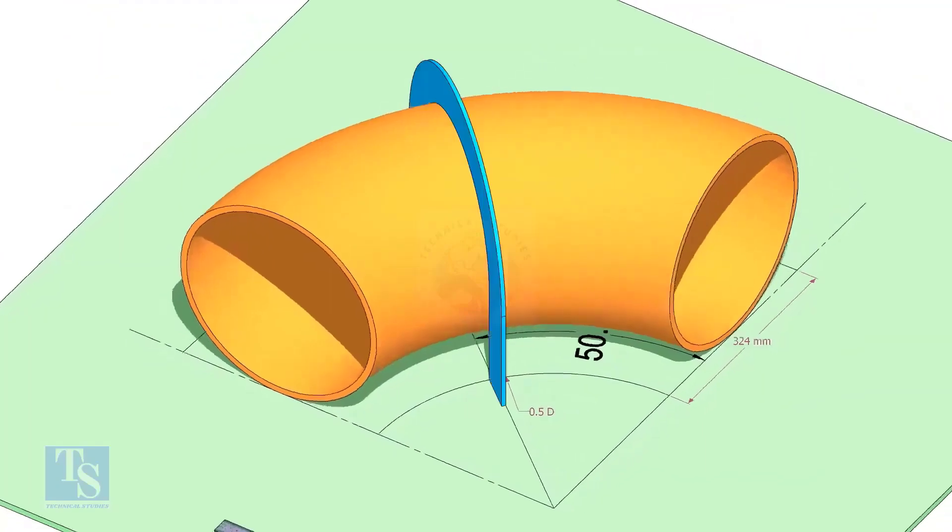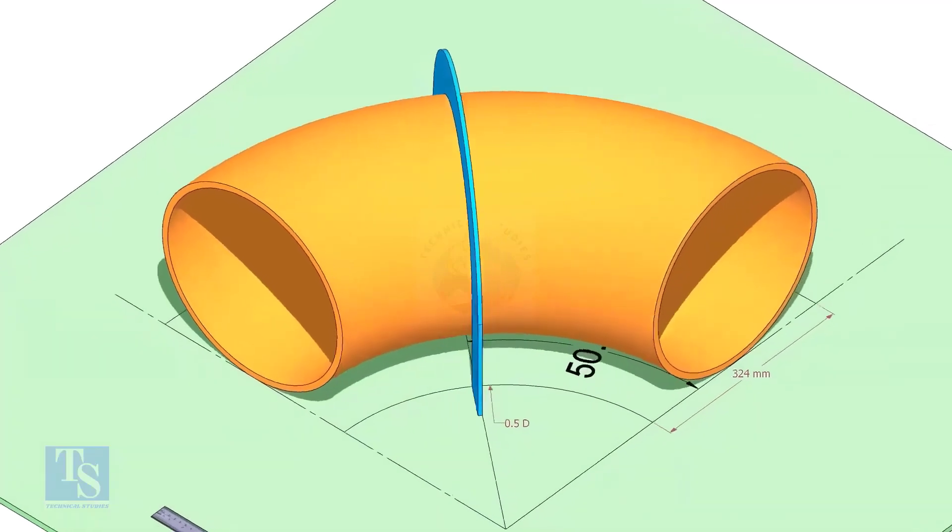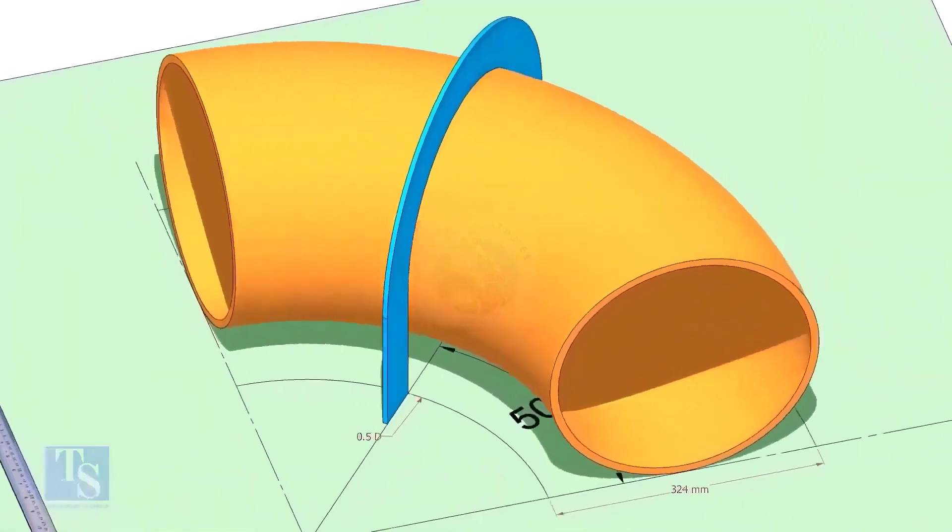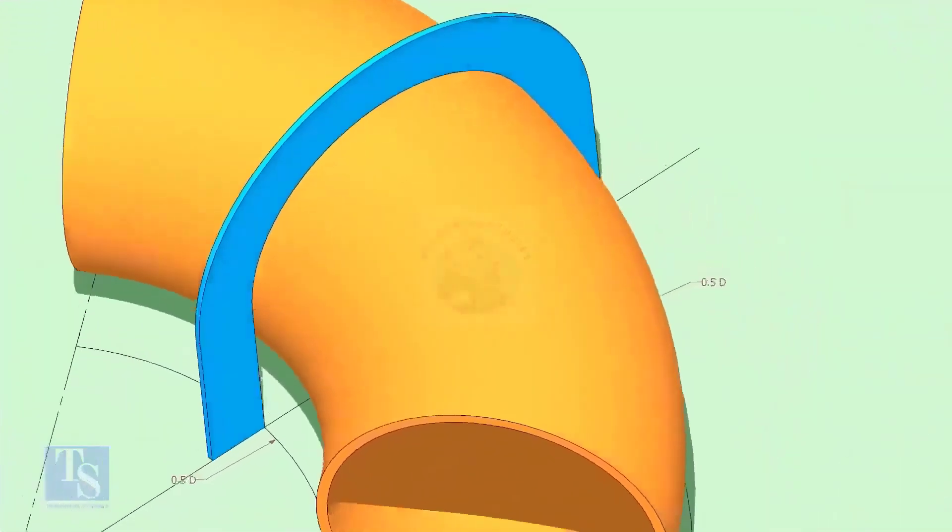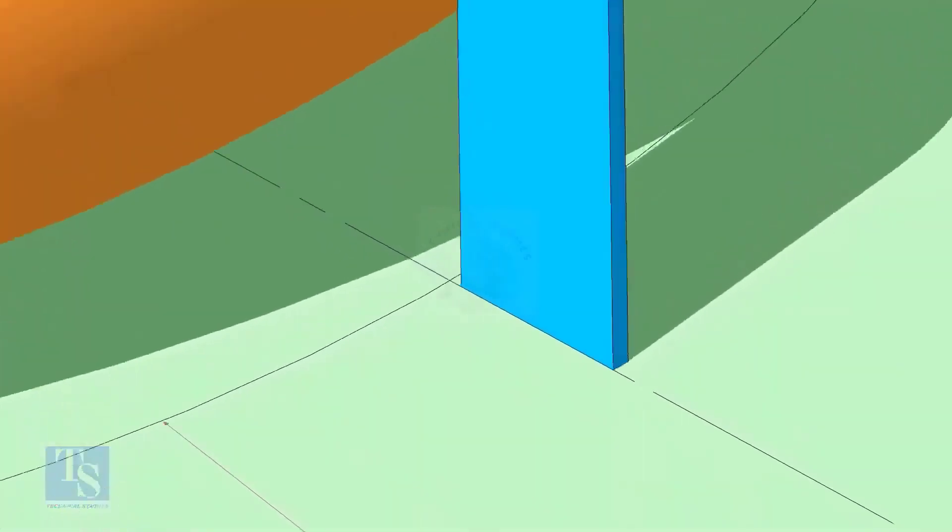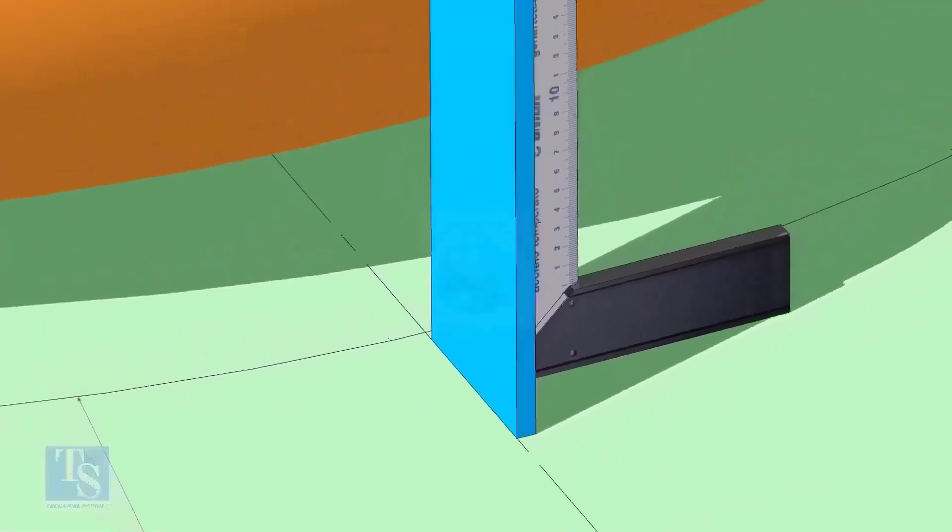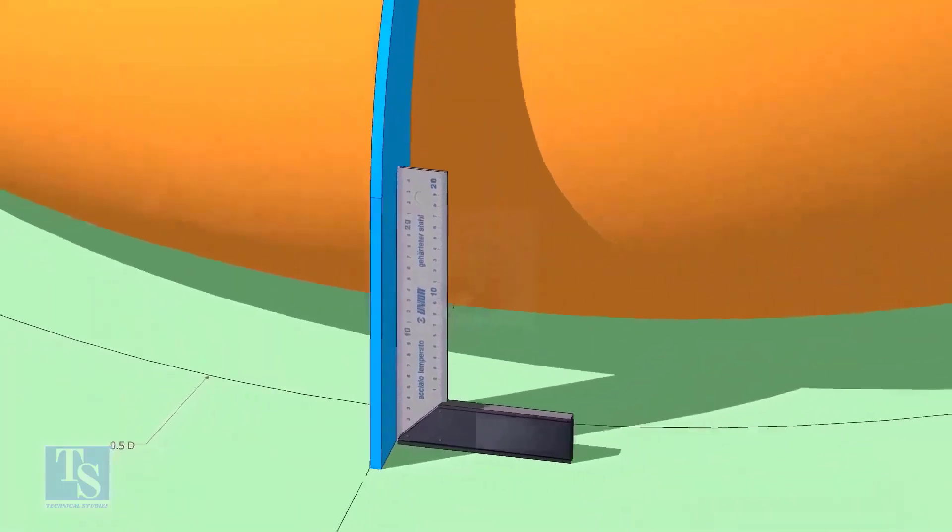Put the half radius plate on the elbow as shown. Make sure it sits on the degree line. Make the squareness.